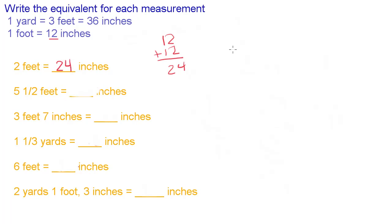So we have 5 and a half feet. So we're going to have to take 5 of those 12s. And then a half of what we know is half of 12 which is 6. Adding 6. So 2, 4, 6, 8, 10 plus 6 is 16. So we know that is 66 inches.